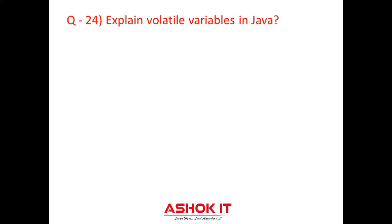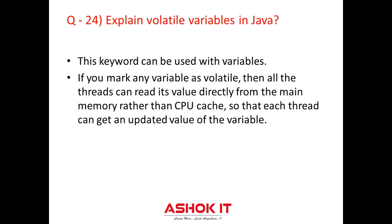Question twenty-four: Explain volatile variables in Java. A volatile variable is a keyword that is used to ensure and address the visibility of changes to a variable in multi-threaded programming. This keyword cannot be used with classes and methods — instead, it can be used with variables. It is simply used to achieve thread safety. If you mark any variable as volatile, then all threads can read its value directly from the main memory rather than CPU cache, so that each thread can get the updated value of the variable.